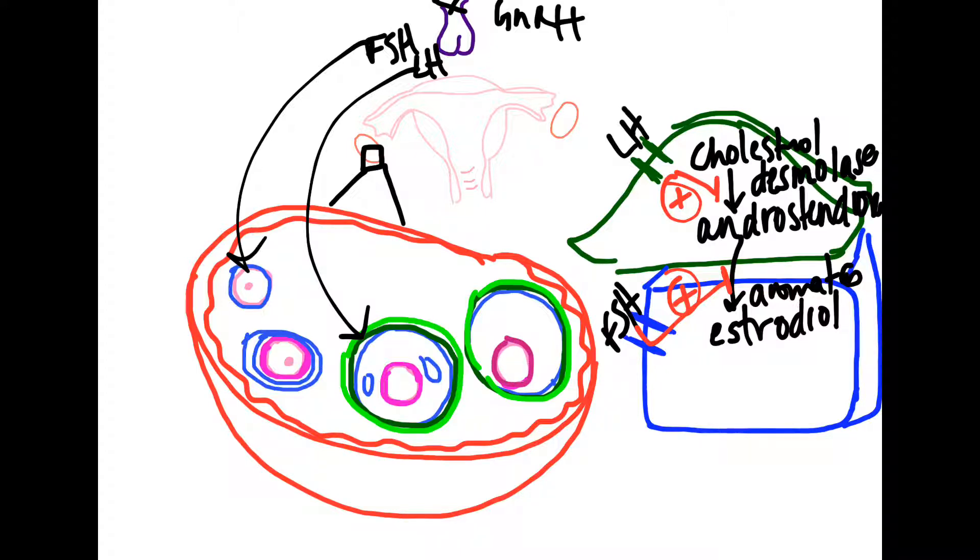This egg, which is in the Graafian follicle, is now in metaphase 2 of meiosis 2. So this egg comes out of the Graafian follicle. It bursts out and then it travels through the fallopian tubes.